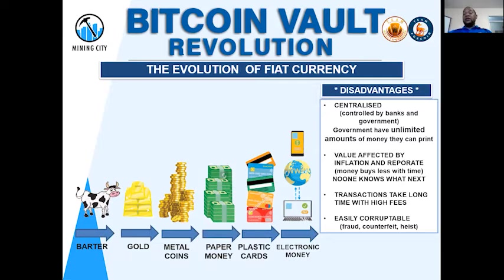What you can see is that money was evolving — it moved from bartering to gold, to metal coins, to paper money. Then we moved from paper money to credit cards, debit cards, and check cards. We no longer carried paper money; we started carrying debit cards. Then money evolved again — now with the internet, we are a global community using electronic money to pay for goods and services.